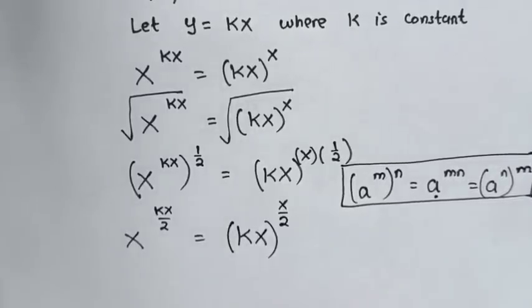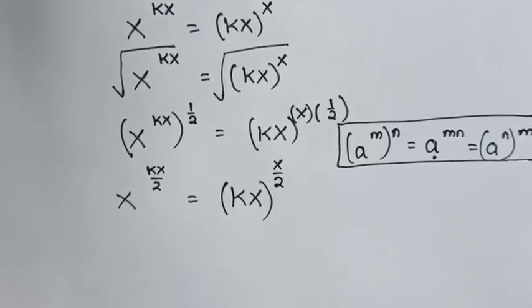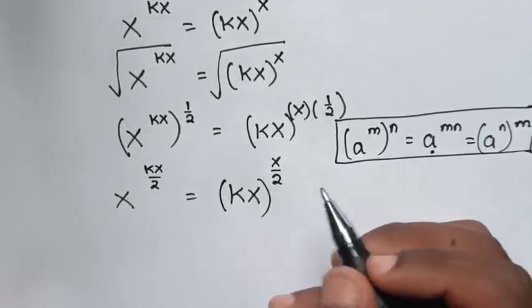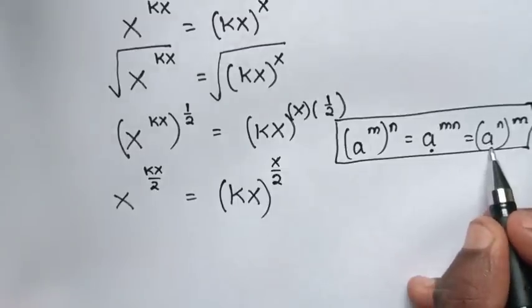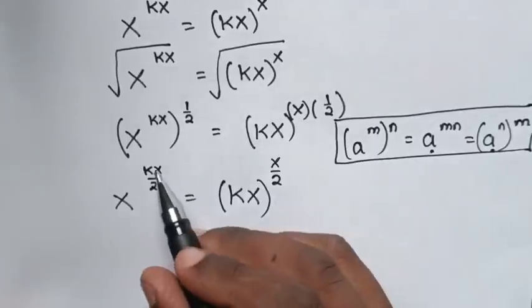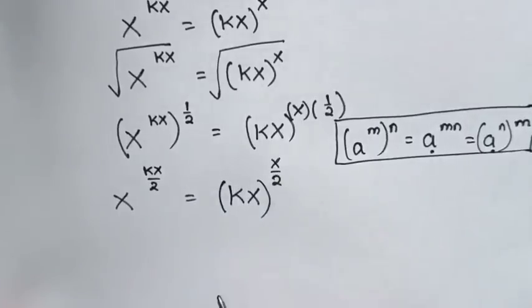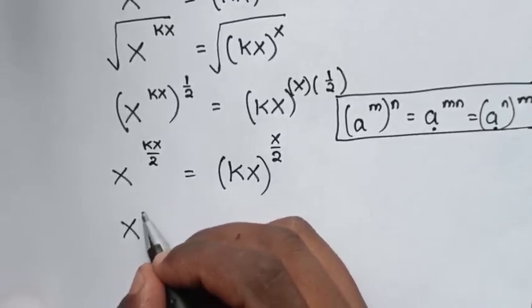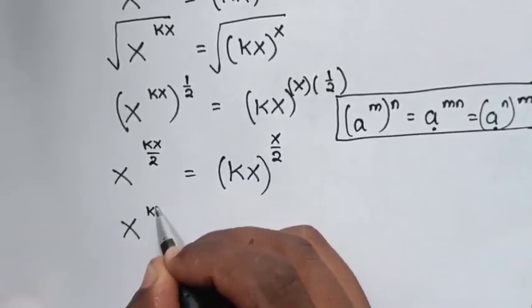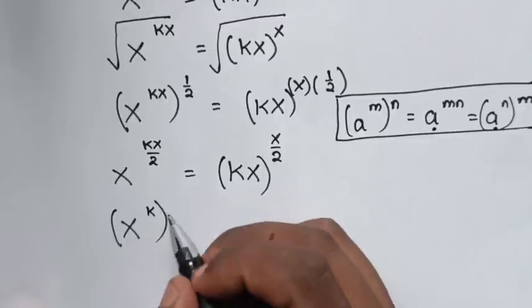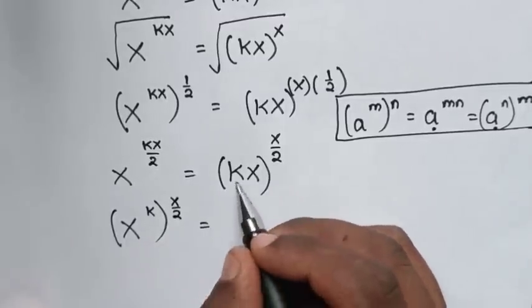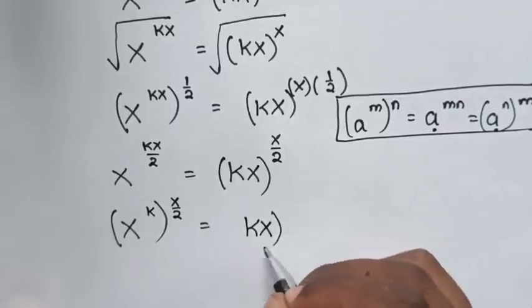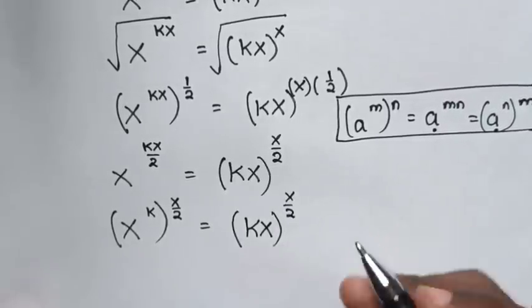We can see that x/2 is common in the powers. So from the exponential rule we factor out the power of x/2, giving x^k bracket power of x/2, equals (kx) bracket power of x/2.